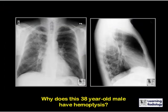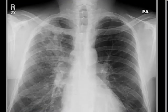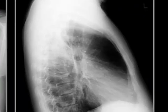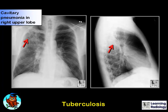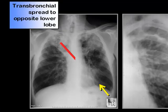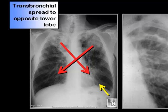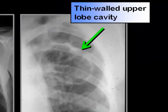Why does this 38-year-old male have hemoptysis? There is a cavitary pneumonia in the right upper lobe, visible on the lateral film as a posterior lesion. Whenever you have a cavitary lesion in the upper lobe, tuberculosis is the diagnosis of exclusion. Tuberculosis has a propensity for transbronchial spread from one upper lobe to the opposite lower lobe. The cavities in tuberculosis tend to be thin-walled upper lobe cavities.